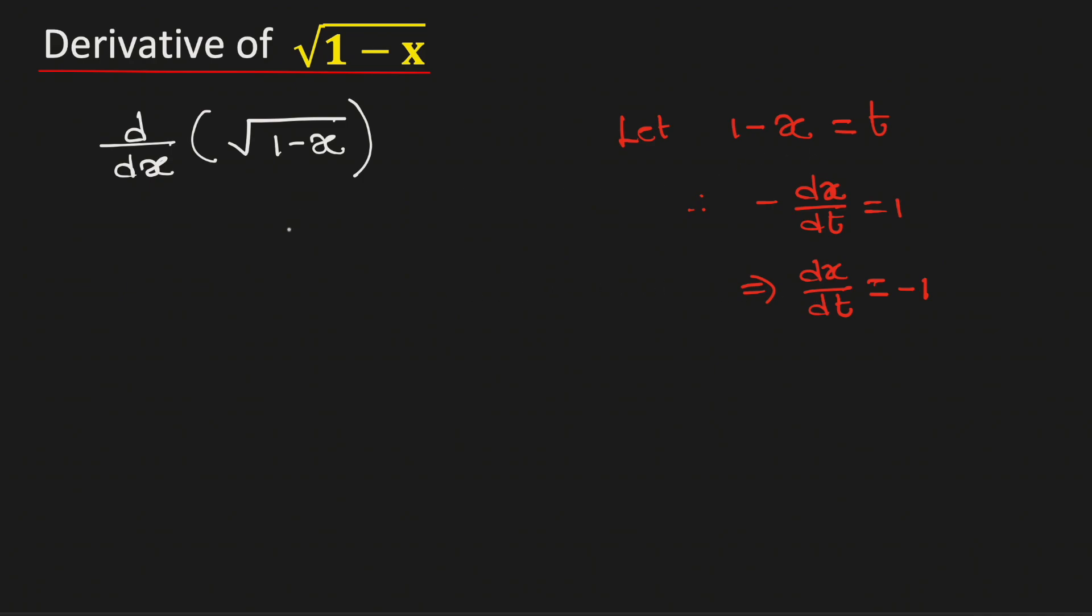Putting this value here, this square root will be equal to square root of t. As this is a function of t, we will take its derivative with respect to t. And we need to multiply dt dx. And this is the chain rule of derivative.